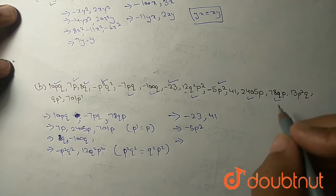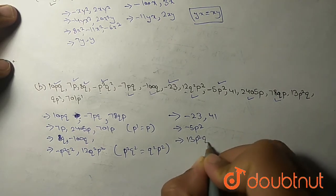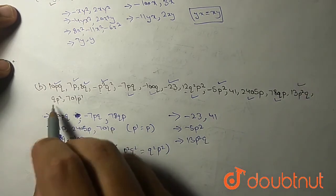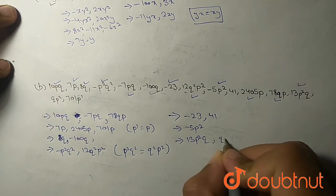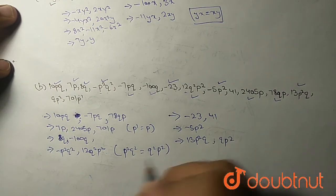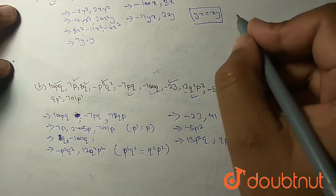Now moving on, 13p squared q and others qp squared. So this is our final answer.